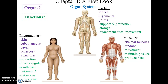The integumentary system's main organ is the skin, and it also includes a subcutaneous layer and accessory structures like hair and nails. The integumentary system helps protect underlying tissues, regulates body temperature, produces vitamin D, and is involved in the various sensations we experience from the skin.